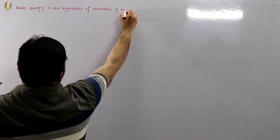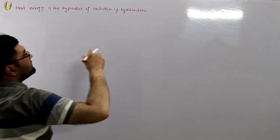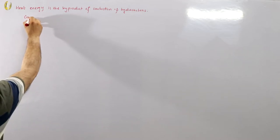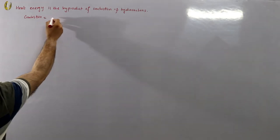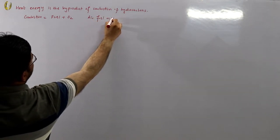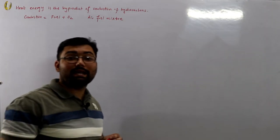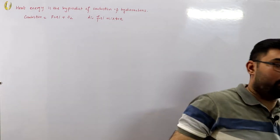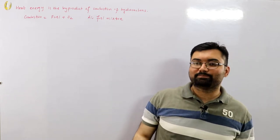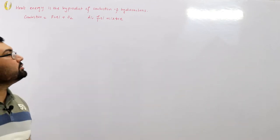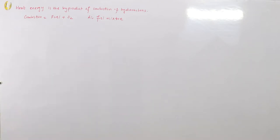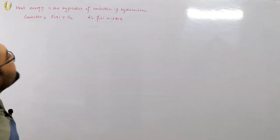Hydrocarbons contain carbon and hydrogen. Combustion is the burning of fuel in the presence of oxygen — so combustion is essentially fuel plus oxygen. This is called an air-fuel mixture. You have to have a proper concentration of both: proper calculations for how much oxygen is required for a given amount of fuel and vice versa. If the composition is off — too high or too low — it lowers the efficiency and combustion does not take place properly.